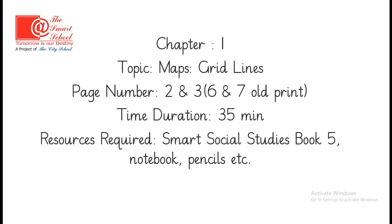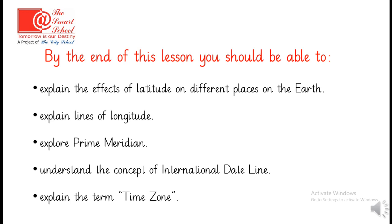Students having old print will find this information on page number 6 and 7. The time duration of today's lesson is 35 minutes and the resources required are Smart Social Studies book 5, notebook and pencils. By the end of this lesson you should be able to explain the effects of latitude on different places on the earth, explain lines of longitude, explore prime meridian, understand the concept of international dateline and explain the term time zone.